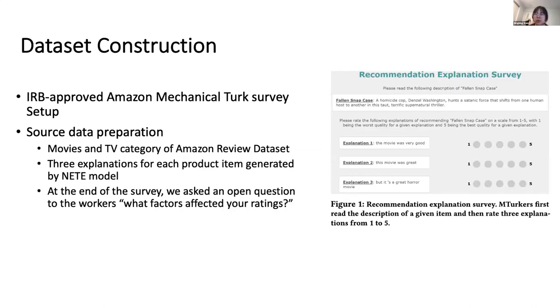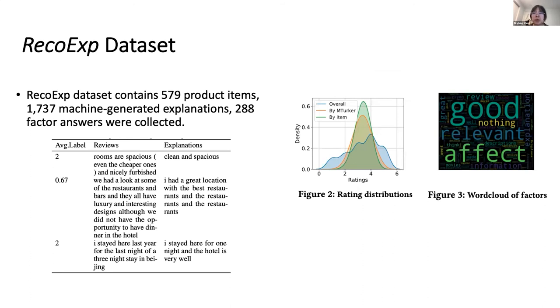But how to build such a framework? First, we need to collect some data. We conduct our IRB-approved Amazon M-Turk survey. The M-Turkers first will read a description of a given item and then rate the three explanations from one to five, with one being the worst quality and five being the best quality. At the end of the survey, we will ask the open question to the workers, what factors affect your ratings? And finally, we collect a dataset named the RAC Explanations.